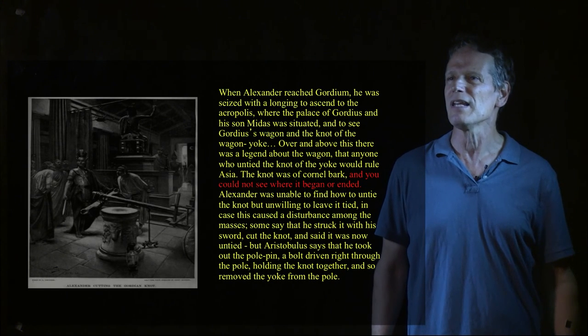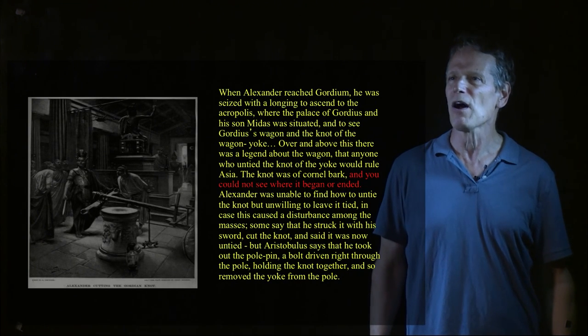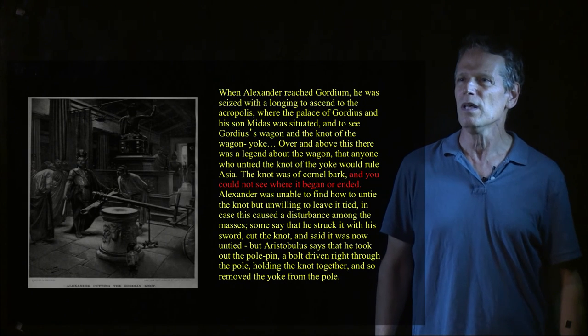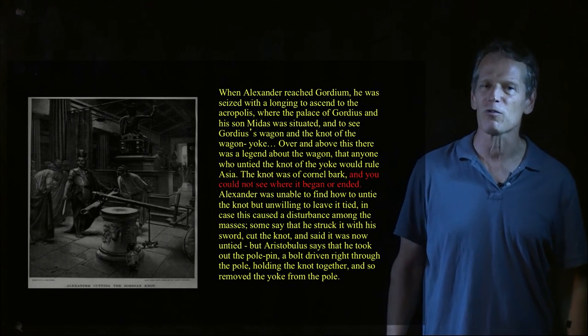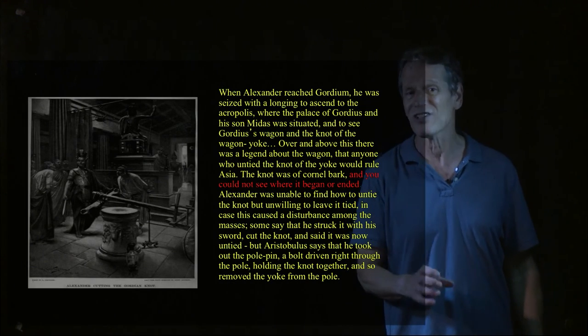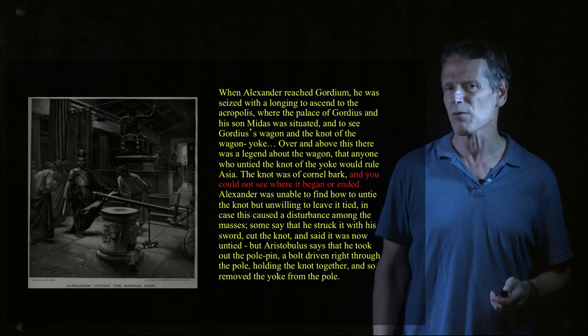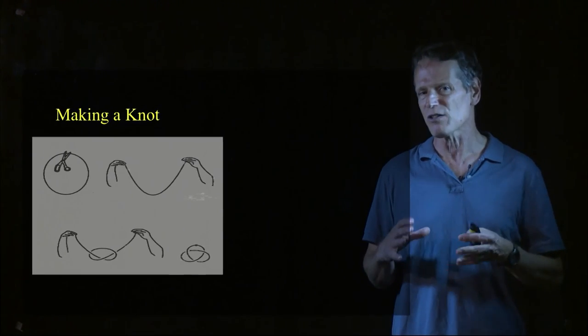He struck it with his sword and cut the knot open. And it was said that now the knot was untied. But Aristobulus says that he took out the pole pin, a bolt driven right through the pole, and therefore holding the knot together, and so removed the yoke from the pole. In other words, he cheated. But in particular, we're going to look more at this idea of a knot where there's neither a beginning nor an end. And that's going to form the basis for our idea of what a knot is.